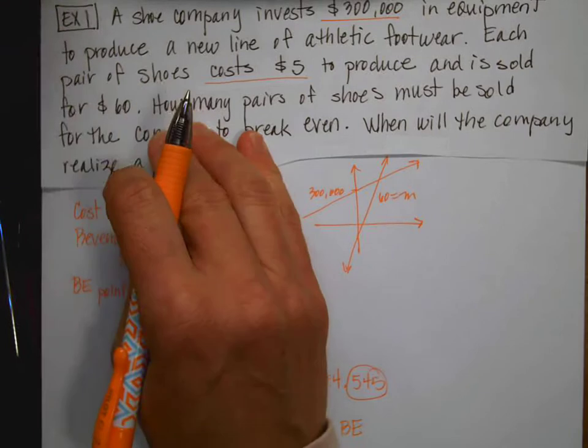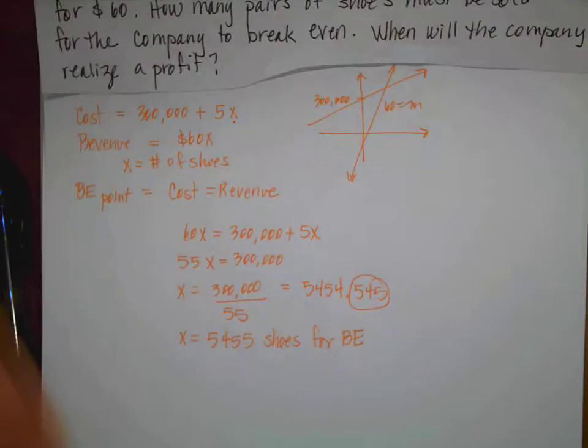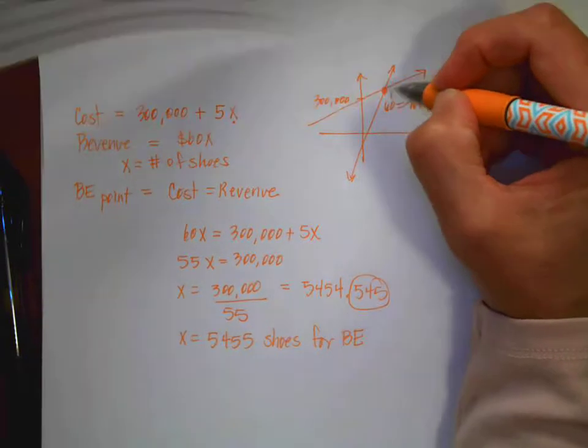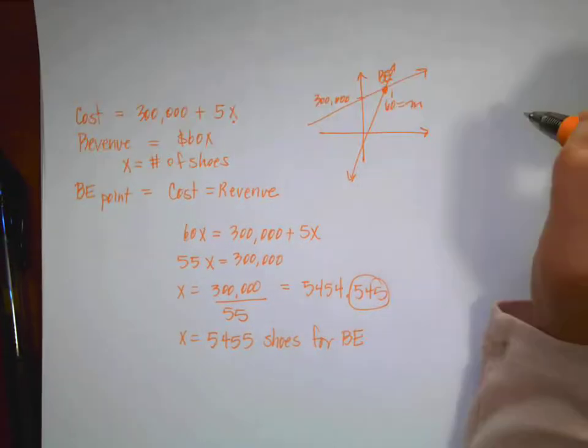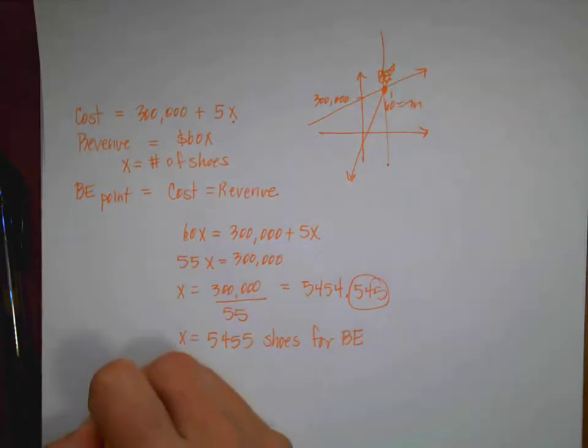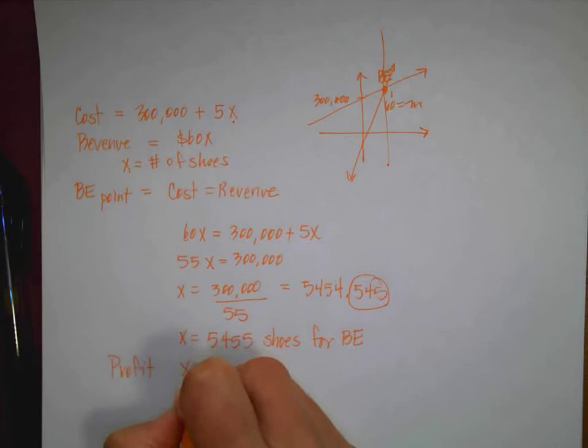So my costs and my revenue are going to be equal at that point. The second question says, when will the company realize a profit? So remember, if this is my break even point, I'm going to realize the profit after that. So the profit is going to occur when I sell more than 5455 shoes. So you always want to make sure that you're really careful how you answer your questions. That's it for the first example.